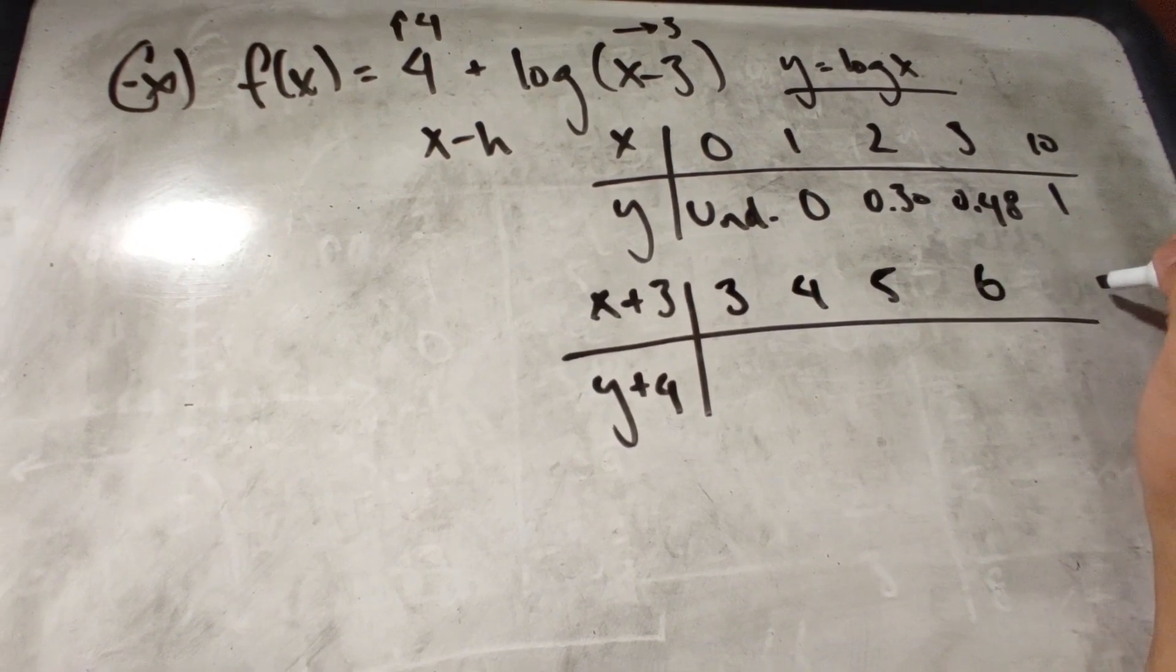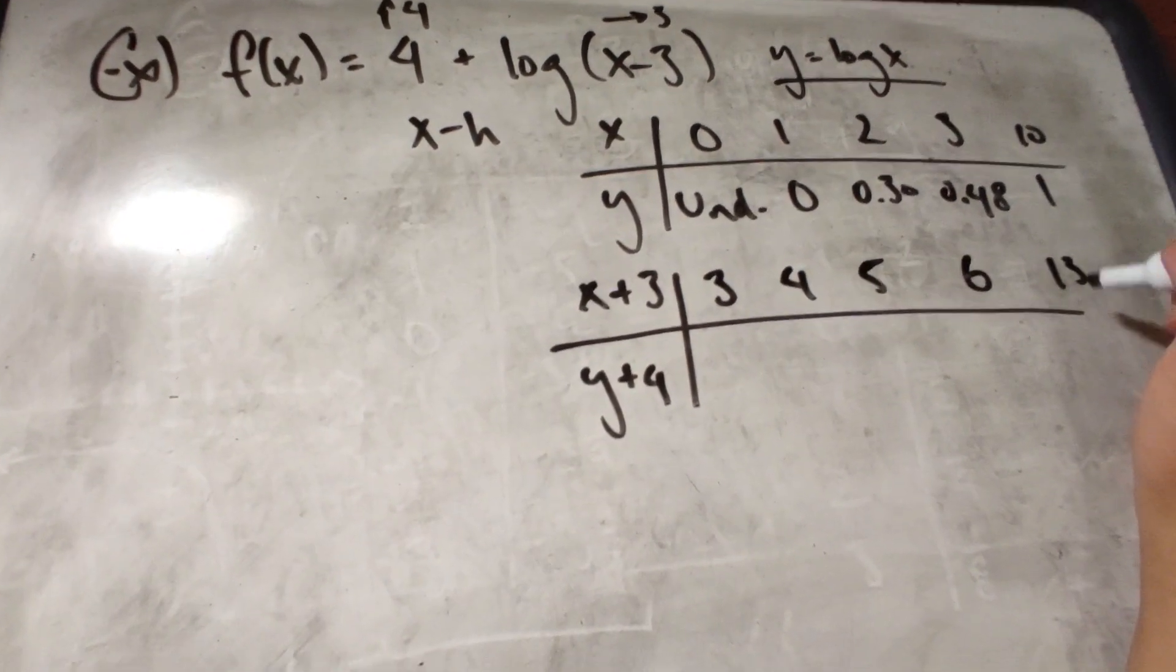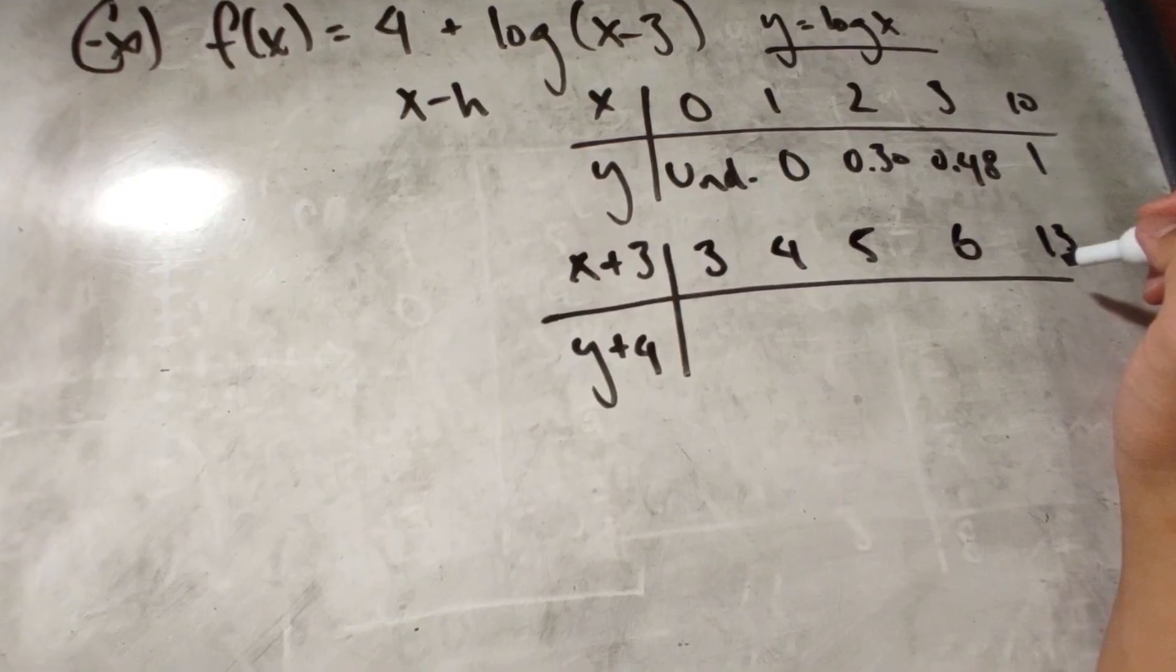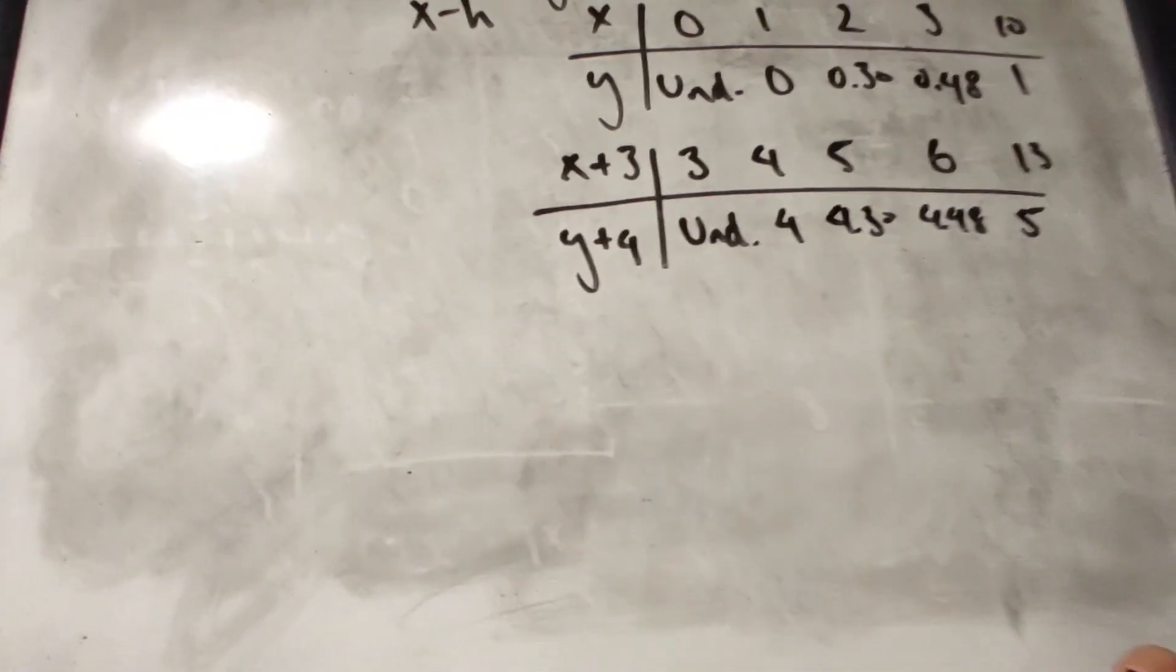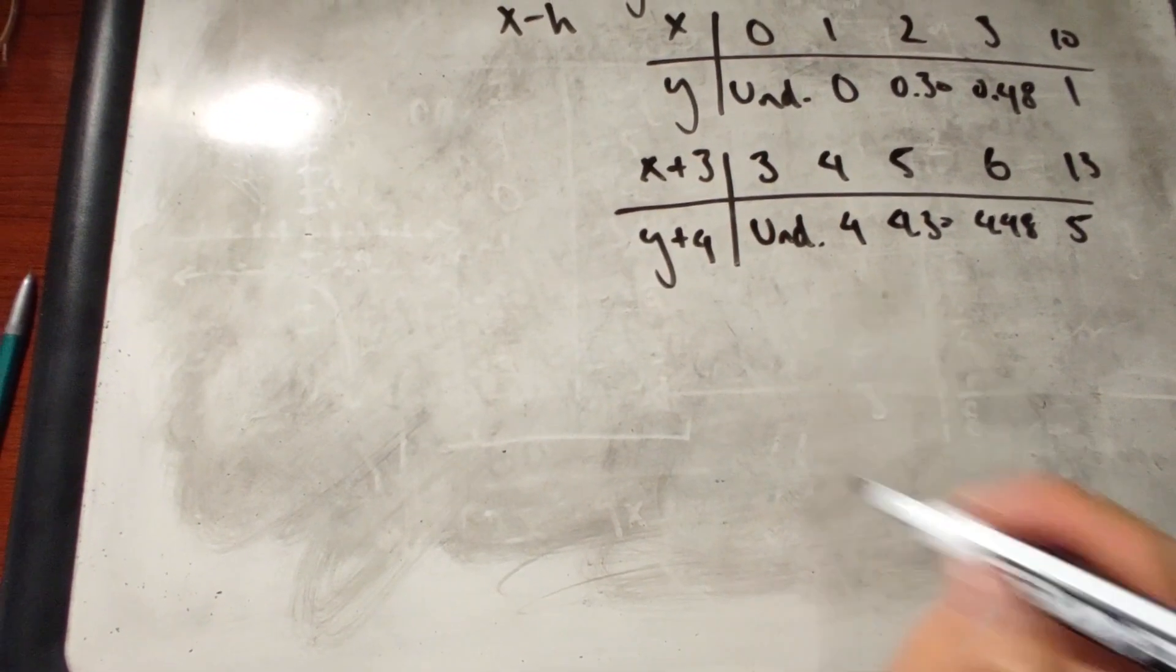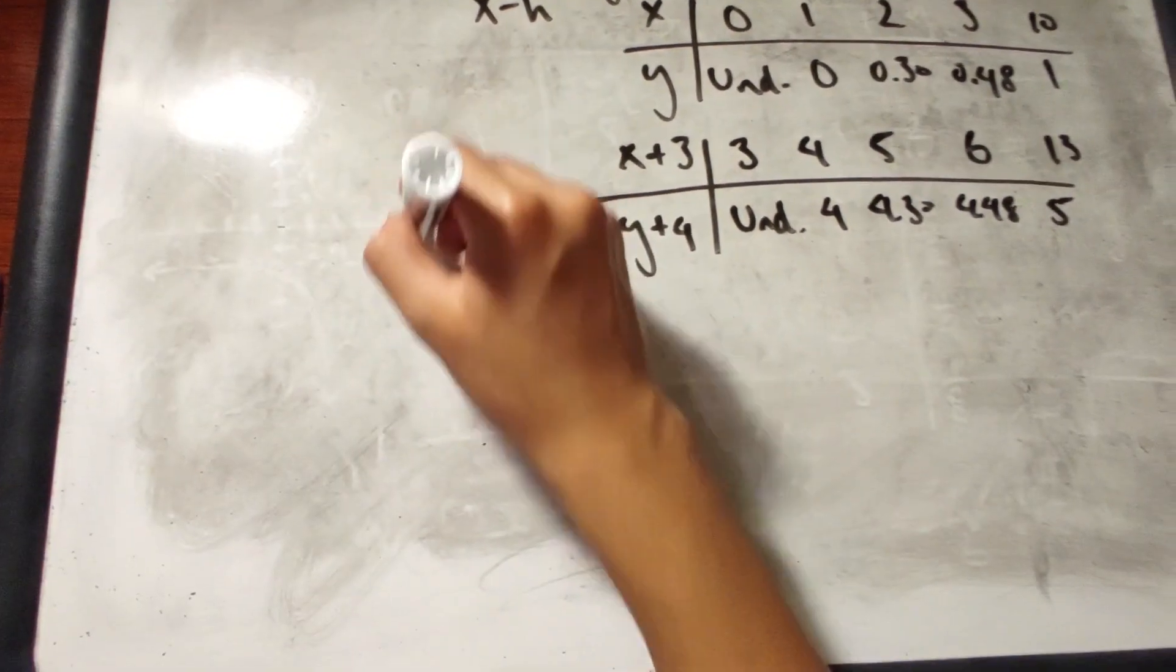This would be 6 and this would be 13. And we could fill this part in. With the table complete, we can now graph the function.